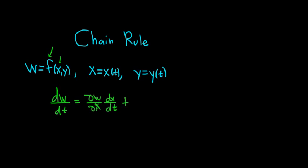Or we can first access y, so del w del y. And now that we're at y, we take the derivative of y with respect to t, so dy dt. If that didn't make sense, it's okay, this is supposed to be kind of difficult.